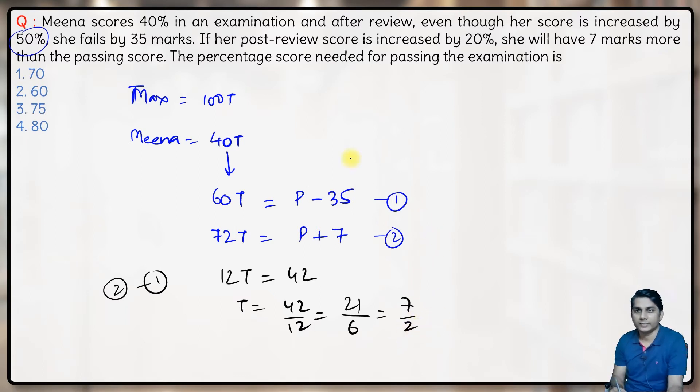T is 7 by 2, that means the maximum marks is 350.